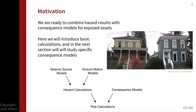We've previously talked through hazard results. Looking at our flowchart, we've got hazard, and now what we want to think about is: if we understand the hazard in terms of ground shaking potential at our site, we need to include consequence models. They're going to tell us, given some ground shaking, what's going to happen to our assets — and we put those together to compute risk.